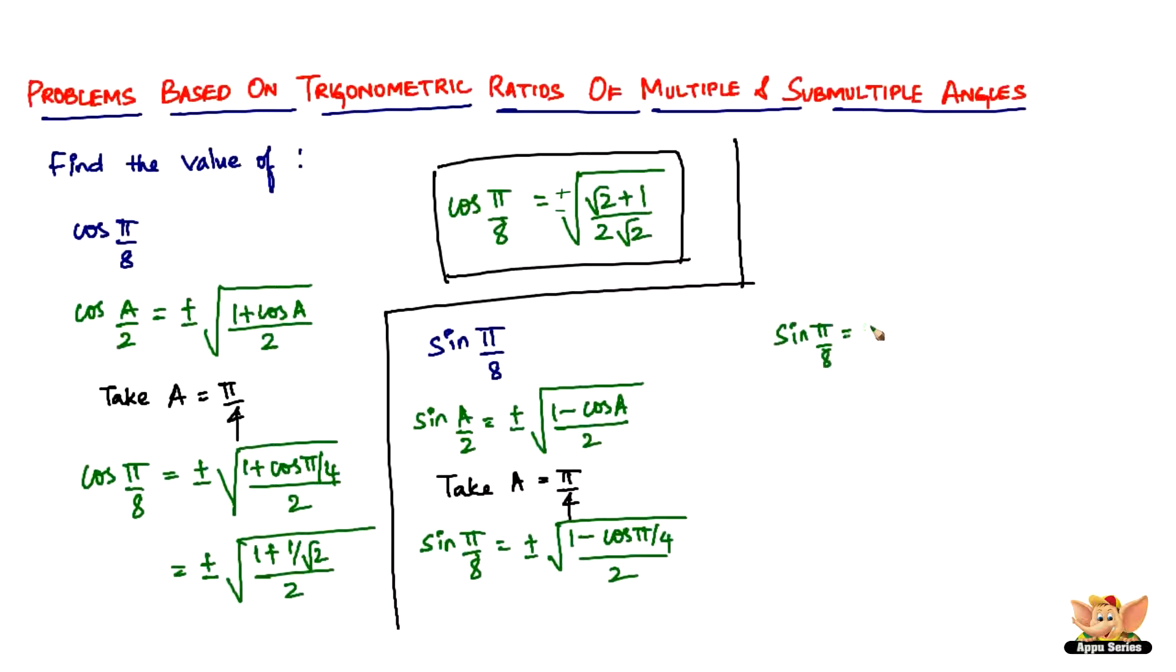sin π/8 equals plus or minus square root of (1 - cos π/4)/2. Cos π/4 is cos 45, which is 1/√2. Dividing by 2 and solving this, you get sin π/8